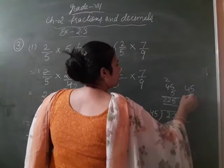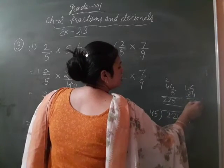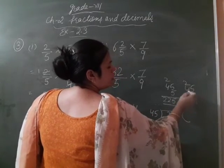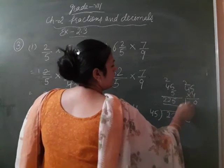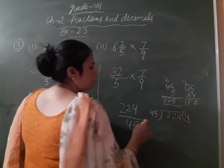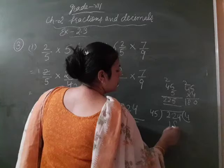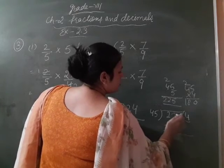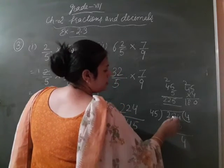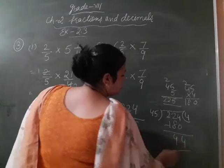So, it is lie on 45, 4's are 5, 4's are 20 to carry, 4, 4's are 16, 17, 18. So, it is divisible on 45, 4's are 180, 4 minus 0, 4, 12 minus 8, 4.